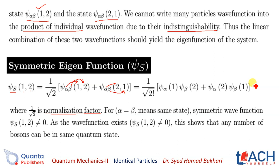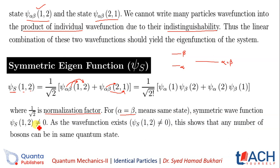Yeh symmetric eigenfunction ki equation aa gayi. Ab kehte hain: for alpha equal to beta — means the same state. Pehle alpha ek alag state thi aur beta ek alag state thi. Agar alpha us state mein aa jaye jis mein beta hai, so alpha becomes equal to beta, toh dono states ki ek single state ban jaye. Is case mein psi_s(1,2) will not be equal to zero, kyunki yahan psi(alpha,1) psi(alpha,2) plus psi(alpha,2) psi(alpha,1) — basically two times ho jaye ga. So it will never equal zero.